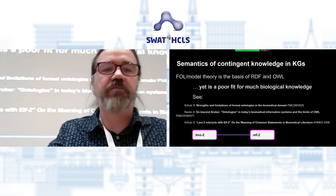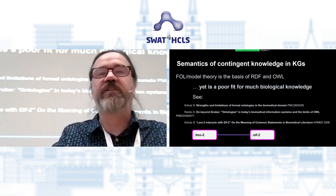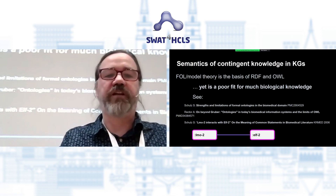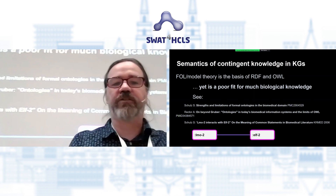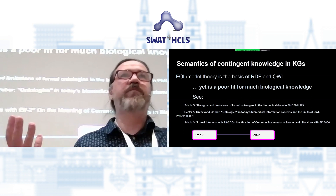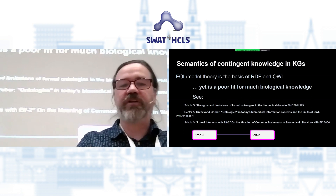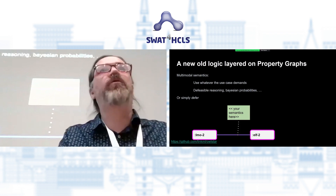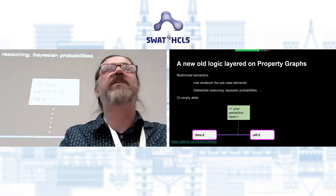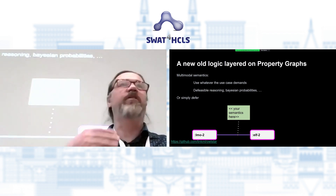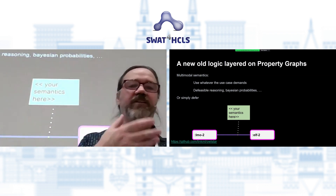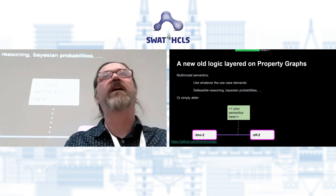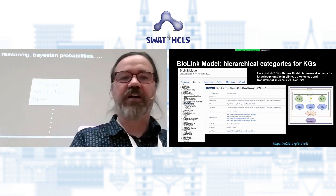We can even use this for modeling other kinds of semantics that don't fit so well into this kind of deductive, first-order logic, model-theoretic framework used in RDF and OWL. A lot has been written by Stefan Schultz and Alan Rector about how challenging it is to model seemingly simple statements like 'the gene product LMO2 interacts with the gene product ELF2.' Property graphs give us an opportunity to think about ways to bring back ideas from earlier iterations — maybe other kinds of reasoning like defeasible reasoning or Bayesian reasoning — rather than having everything strictly based around model theory.